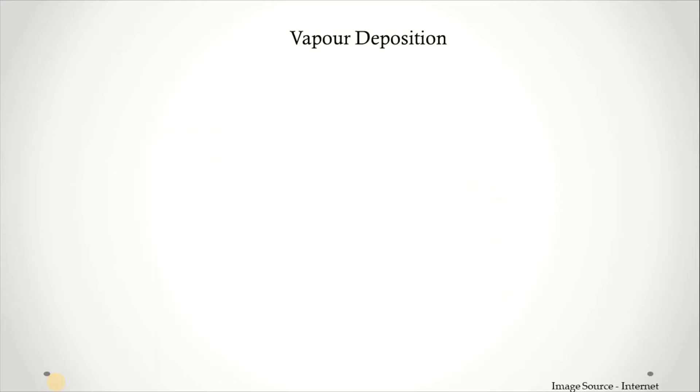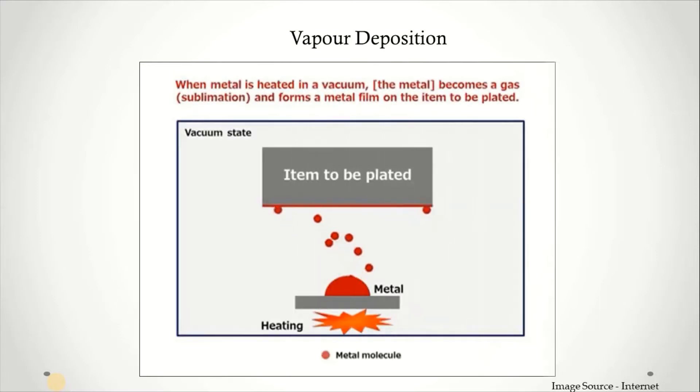Next, vapor deposition. Chemical vapor deposition is a vacuum deposition method used to produce high quality, high performance solid materials. The process is often used in the semiconductor industry to produce thin films. Here, metal is heated in a vacuum and the metal becomes a gas through sublimation and forms a metal film on the atom to be plated.